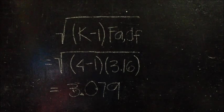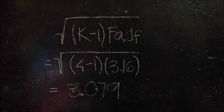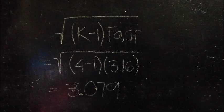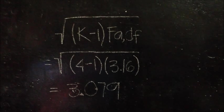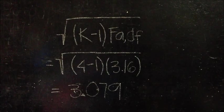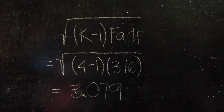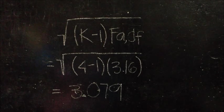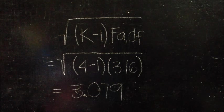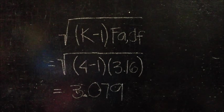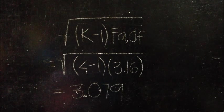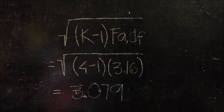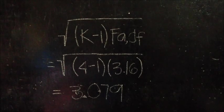Next, we need to compare these differences to Scheffe's critical S value. But first, we need to compute for the square root of K minus 1 multiplied to the DF, which is equal to the square root of 4 minus 1 multiplied to 3.16, which is equal to 3.079, where the DF is the critical value of the ANOVA table.